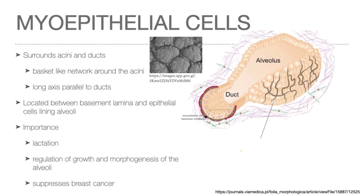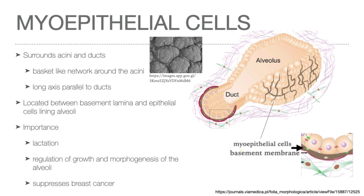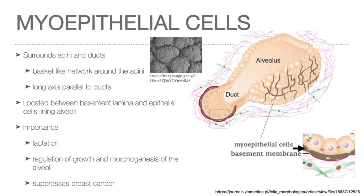Myoepithelial cells surround the acinite and ducts. They are stellate-shaped and form a basket-like network around the acinite, arranged with their long axis parallel to the ducts they surround. These cells are located between the basement membrane and the epithelial cells lining the alveoli. During lactation, stimulation of the nipple by a suckling baby results in release of oxytocin from the pituitary gland, leading to contraction of the myoepithelial cells, constricting the acinite and expressing milk from its lumen into the duct system.